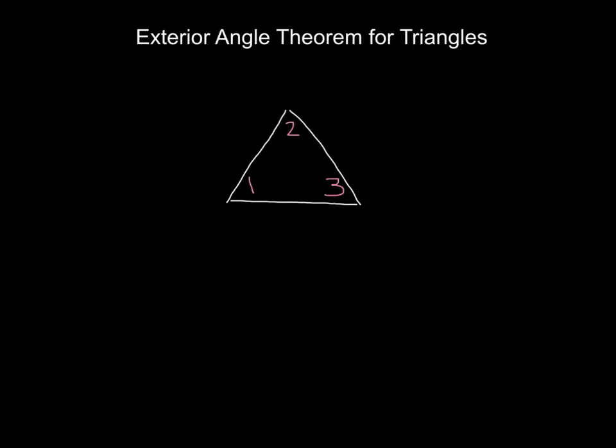Now that you understand that the sum of the interior angles in every triangle is equal to 180 degrees, we can explore another angle relationship that exists, but this time we'll be looking outside the triangle at an exterior angle.